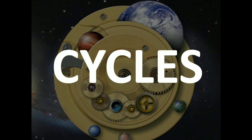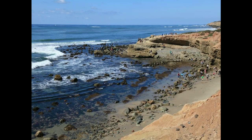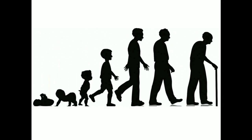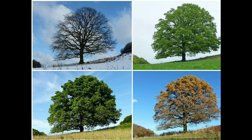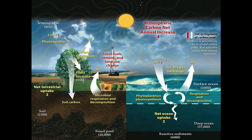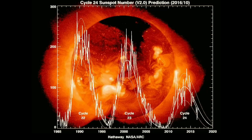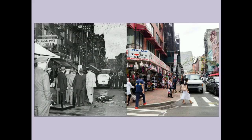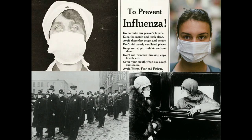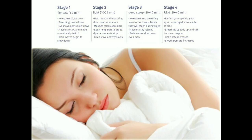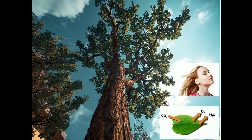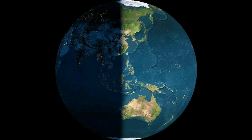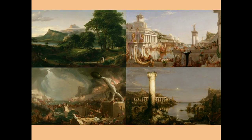Cycles can be found everywhere in the universe — there are no exceptions. Examples include the rise and fall of ocean tides, the life cycles of living things, the great circle of the seasons, the water cycle, the carbon cycle, cycles of sunspots, the lunar cycle, the wax and wane of plant and animal populations, cycles of violence, the cycle of disease epidemics, the sleep cycle, biorhythm cycles, the oxygen cycle, the cycle of day and night, and the rise and fall of empires.